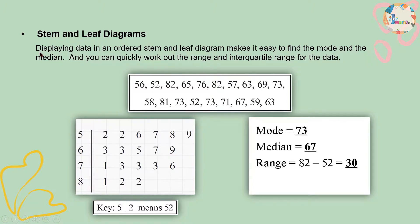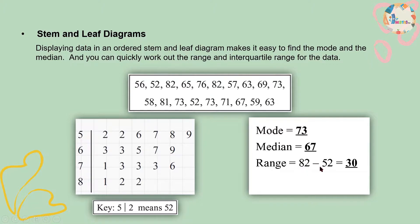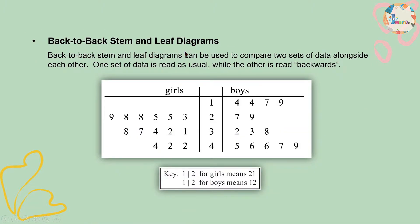What is a stem and leaf diagram? Basically, displaying data in an ordered stem and leaf diagram makes it easy to find the mode and the median. We will be representing data in the form of stem and leaf with a key — for example, 5|2 means 52, 5|6 means 56, and 5|9 means 59. From this data we can find the mode, which is the most occurring value, the median, which is the middle value, and the range, which is maximum minus minimum — for example, 82 minus 52 equals 30.